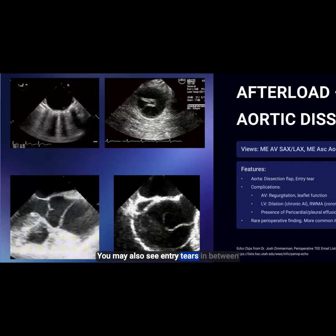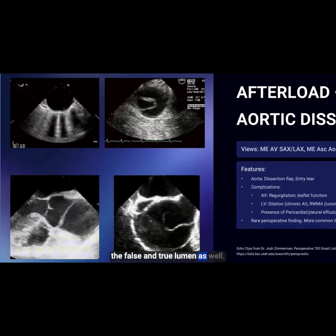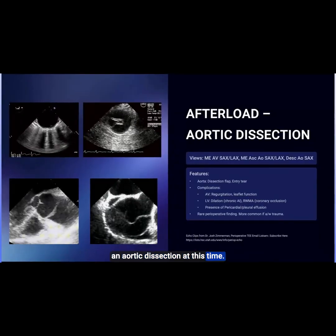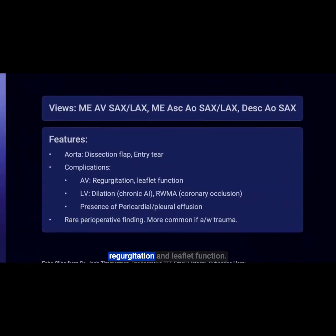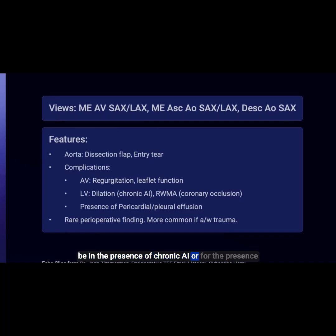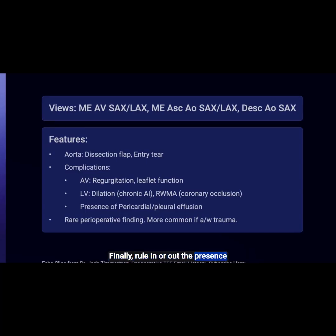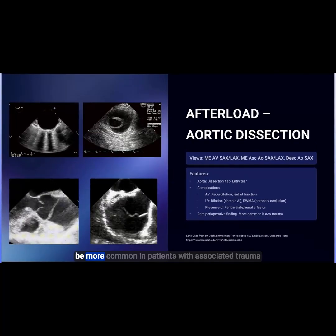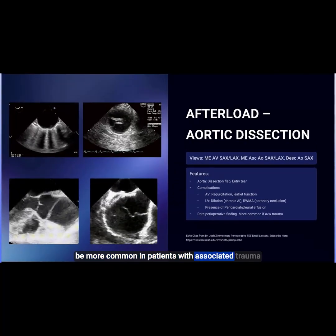You may also see entry tears between the false and true lumens. Evaluate for complications of aortic dissection: for the aortic valve, look for regurgitation and leaflet function; for the left ventricle, assess whether it is dilated — as seen with chronic aortic insufficiency — or whether regional wall motion abnormalities are present, indicating coronary occlusion. Finally, rule in or out pericardial and pleural effusions. This is a rare perioperative finding but may be more common in patients with associated trauma.